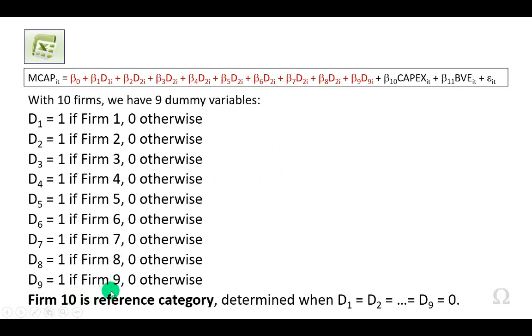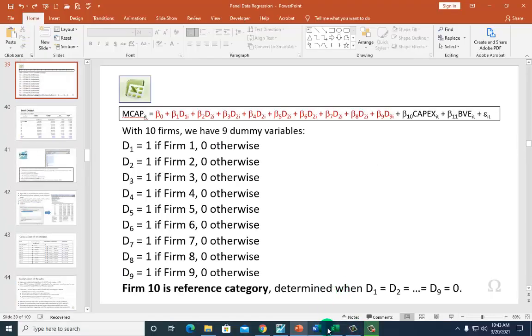So in this working example, firm 10 is going to be the reference category which is determined where all the dummy variables are equal to 0. So I'm going to show this real quick on Excel.